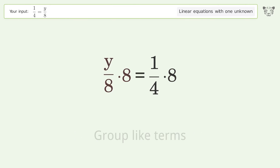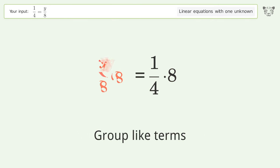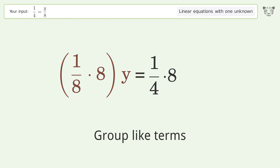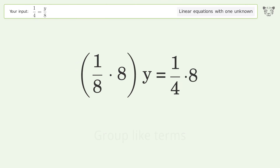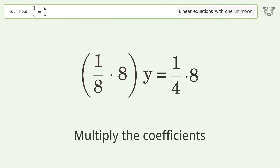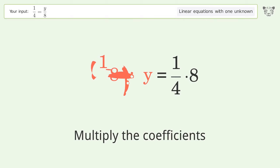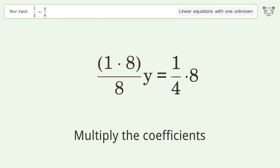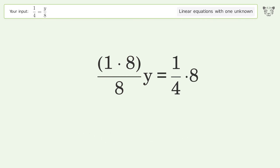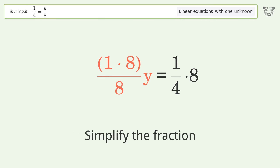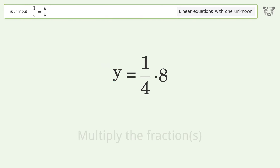Isolate the y by multiplying both sides by 8. Group like terms. Multiply the coefficients. Then simplify the fraction.